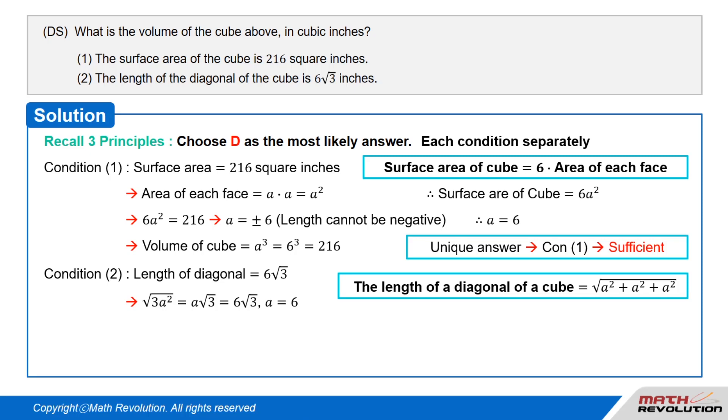Putting this into an equation, we get A times square root of 3 equals 6 times square root of 3. So, A equals 6. The volume of cube equals A cubed equals 6 cubed, or 216. This solution is unique, so condition 2 is sufficient.